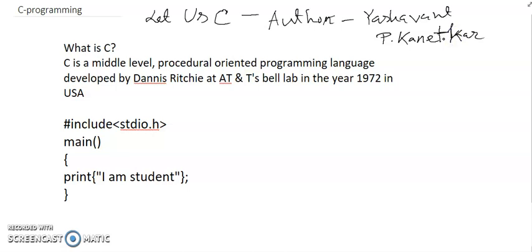What is C? C is a middle level, procedural oriented programming language developed by Dennis Ritchie at AT&T's Bell Lab in the year 1972. It is middle level, it can be used as a lower level and higher level language. So this C program is very important.